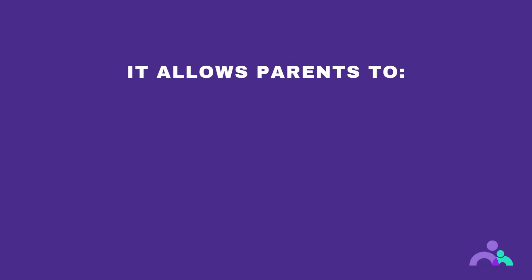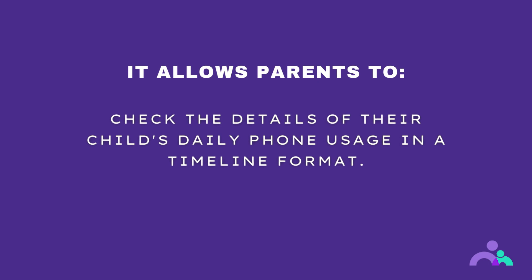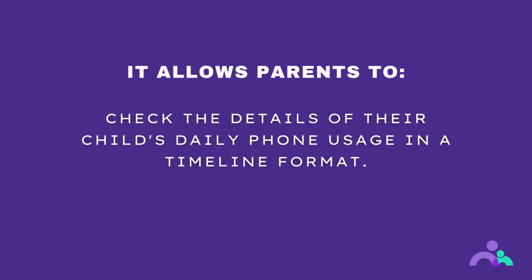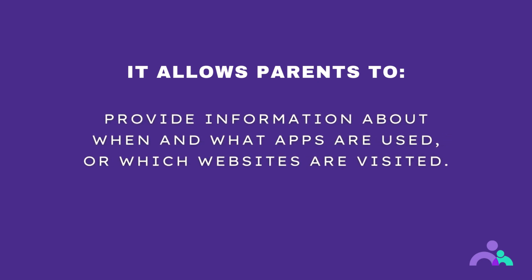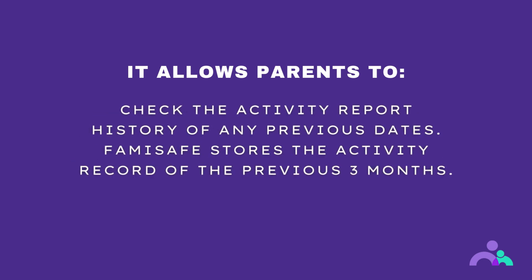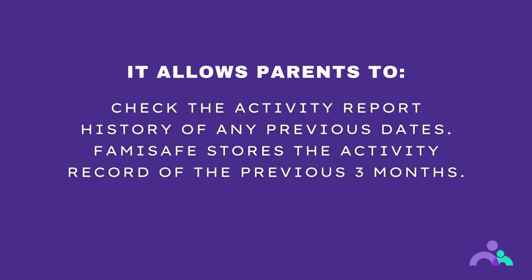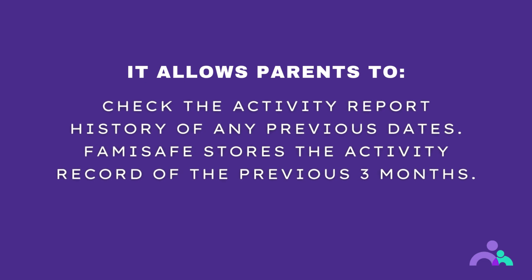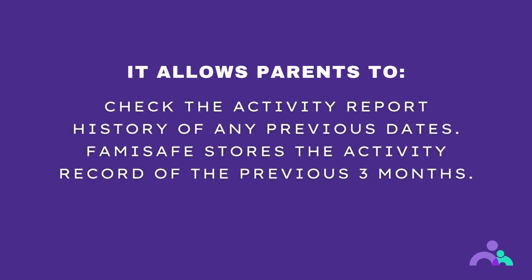Activity report. The activity reporting features allow parents to check the details of their child's daily phone usage in a timeline format. It provides information about when and what apps are used or which websites are visited. You can check the activity reports history of any previous dates. Famisafe stores the activity record of the previous three months.